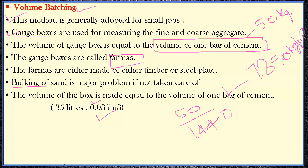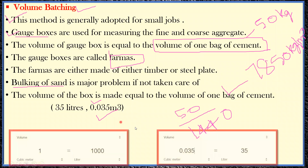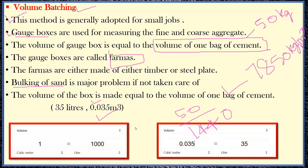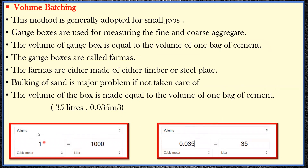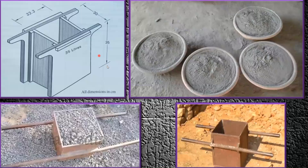Since one cubic meter equals 1000 liters, 0.035 cubic meters comes out to be 35 liters. That is why the gauge box has a capacity of 35 liters. This is all about the volume batching concept, and now we will see how it is done practically.